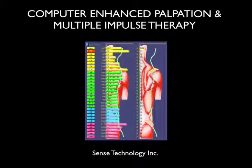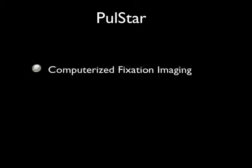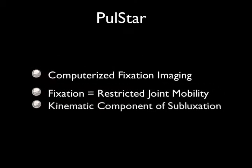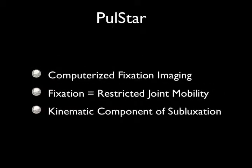The PulseStar is used to apply multiple impulse treatment to the spine and peripheral joints. The PulseStar analysis is designed to assist the chiropractor in identifying fixations or restricted intersegmental joint mobility.